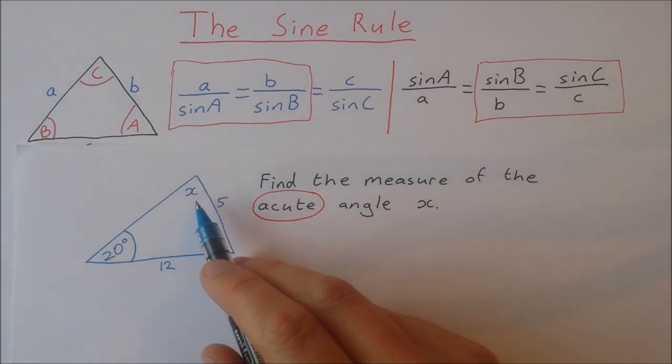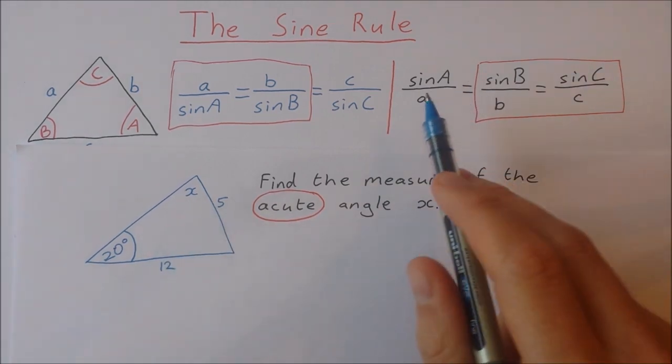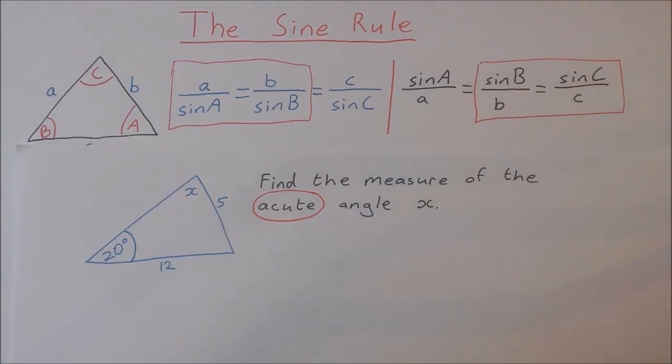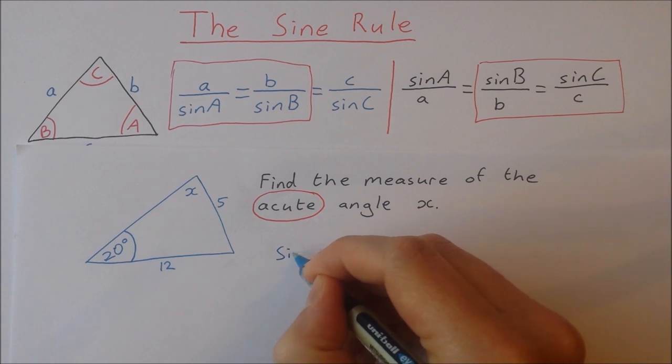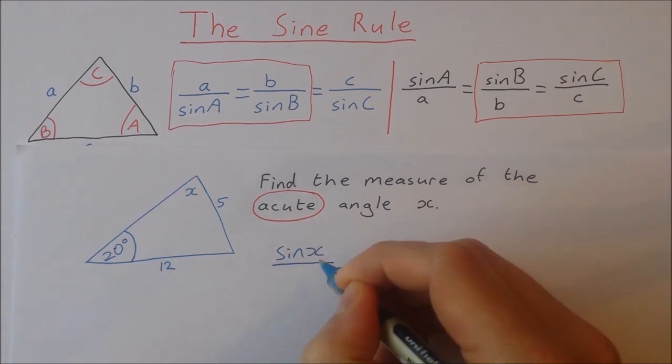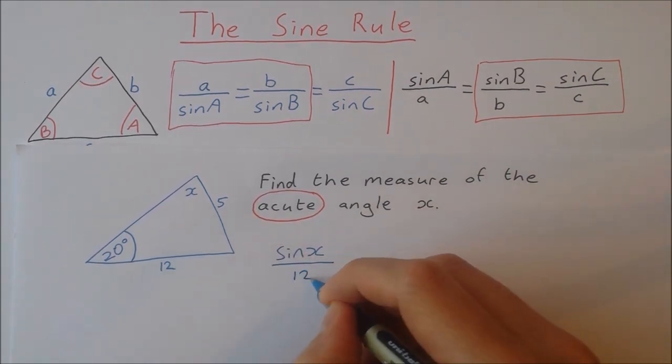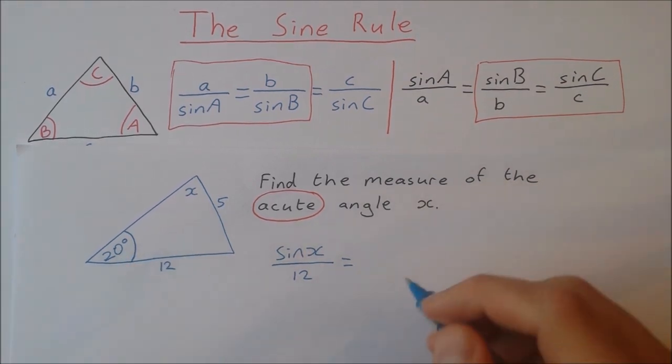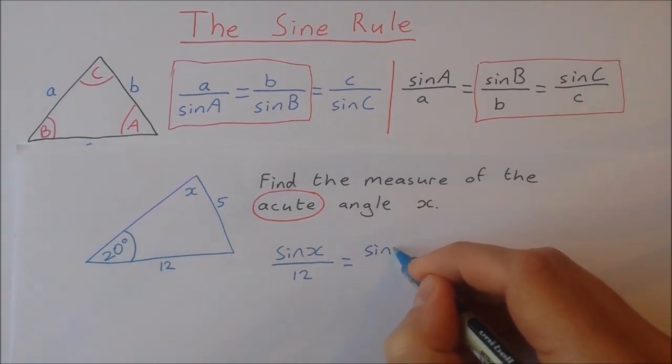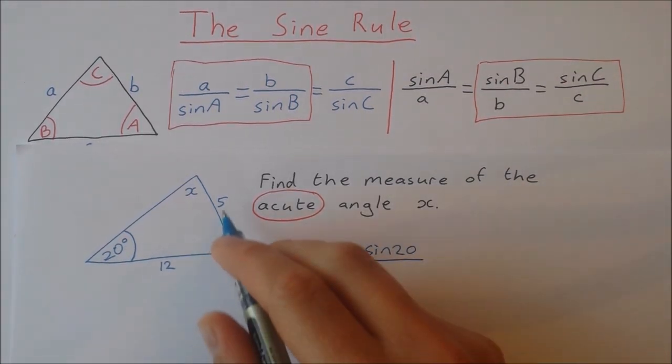So I'm going to again put my unknown on the top left. So I'm going to use this form here and say the sine of x over 12 is equal to the sine of 20 over 5.